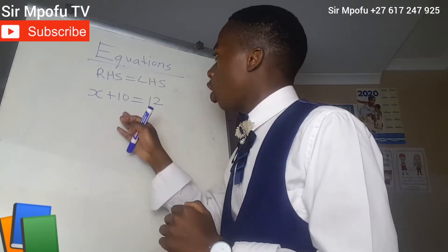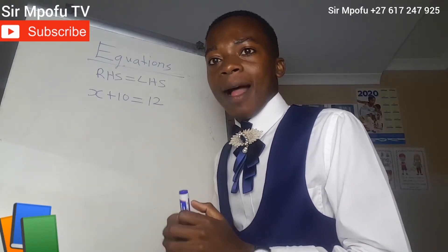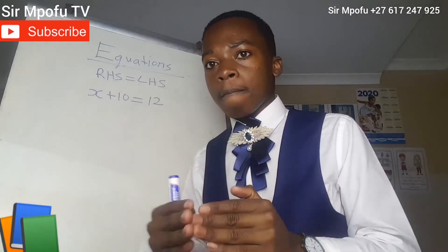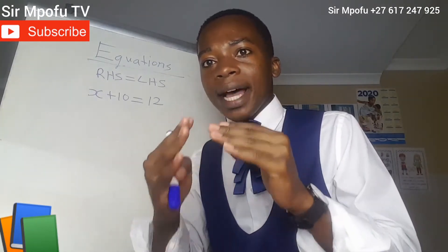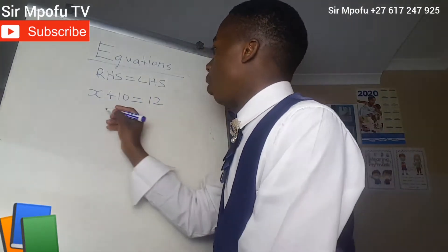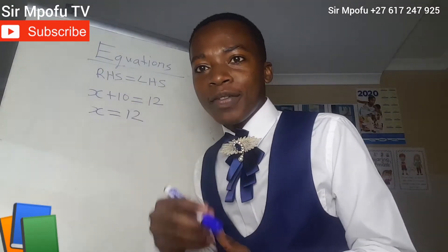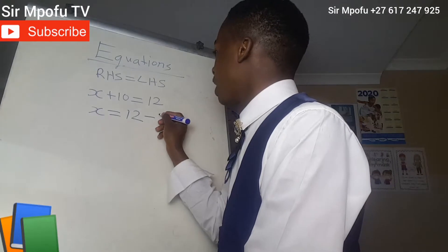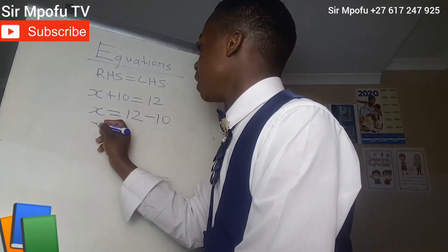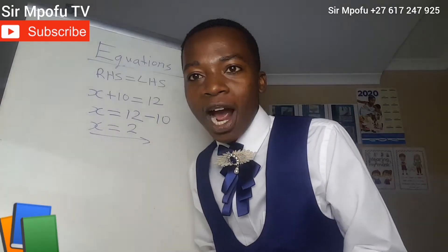For instance, you might be asked to find x, given that x plus 10 is equal to 12. We're going to take this 10 and put it on the other side — change side, change side. The equal sign is our boundary. So now it's going to be x equals 12 minus 10. 10 was having a positive sign on this side, so change side means minus 10. x equals 2. This is your final answer.